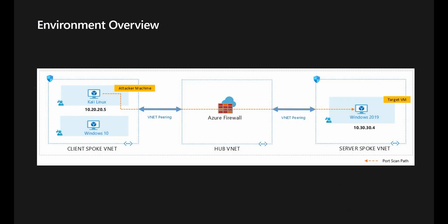So let's first understand how our demo environment is laid out. As you can see on the screen, we have three VNets in the environment, of which two are spokes and one is a hub. Starting from the left, we have our client VNet, which has an IP range of 10.20.20.0/24. The Kali Linux machine in the client VNet has an IP address of 10.20.20.5, and this is the machine on which we'll be initiating a port scan.